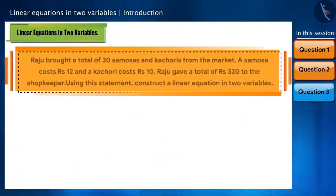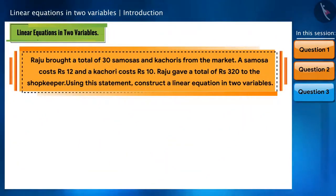Let's see another question. Raju brought a total of 30 samosas and kachoris from the market. A samosa costs rupees 12 and a kachori costs rupees 10. Raju gave a total of rupees 320 to the shopkeeper. Using this statement, construct a linear equation in two variables.